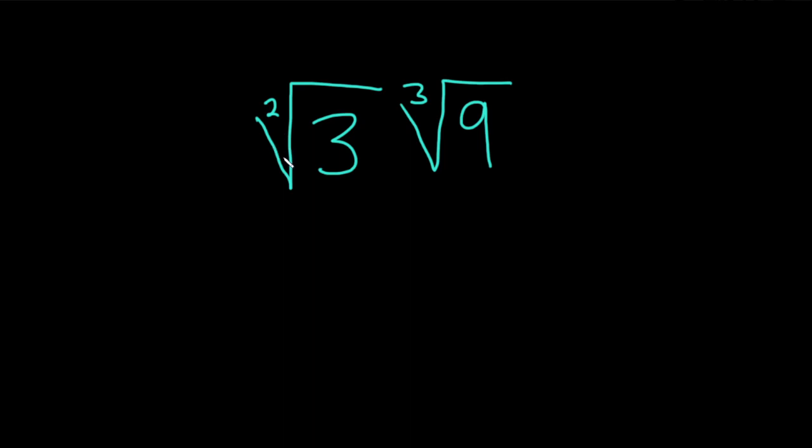First let's do the square root of three. We have the square root of three. There's really a one here and there's a two here, and that's really three to one over two. But we can think of this as three to the three over six, because we can just multiply by three over three.